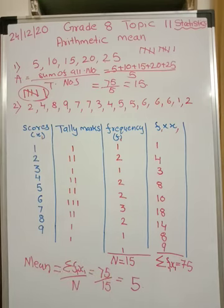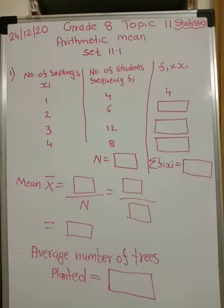So let us do now exercise practice set 11.1. Look at first problem from set 11.1. The following table shows the number of saplings planted by 30 students. Fill in the boxes and find the average number of saplings planted by each student.